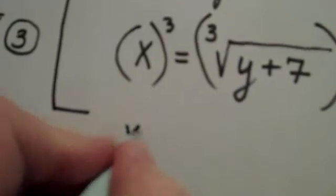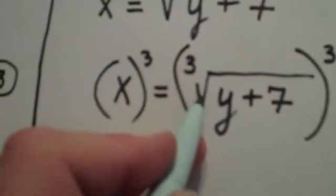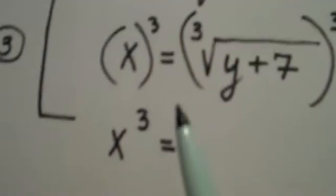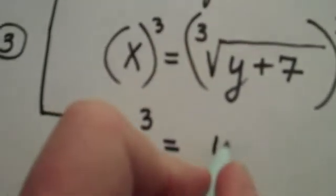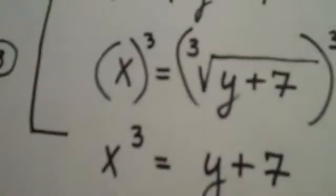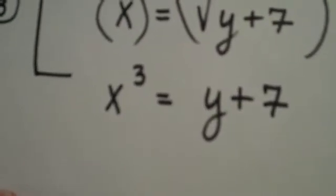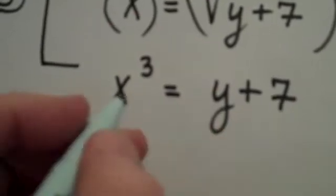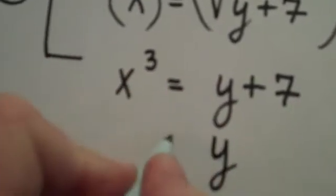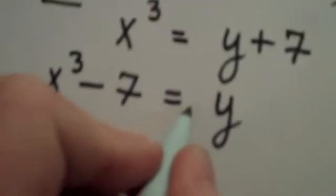x to the third is simply that. And notice what happens on the right-hand side of my equation. The cube root function and the cubing function are inverses. That means what one does, the other one undoes. So y plus 7 simply remains all alone. The cube root and the cube have completely disappeared, leaving y plus 7 unaffected. My final step here to get y alone, of course, would be to subtract 7. I have x cubed minus 7 is equal to y.